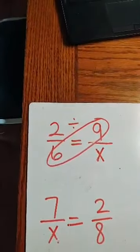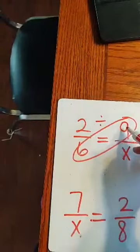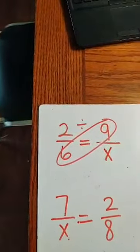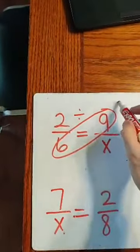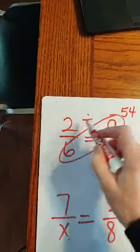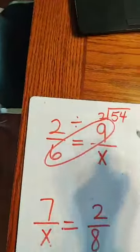So we are going to multiply numbers that are diagonal, 9 times 6 is 54, and then we're going to divide by that 2. Divide by 2.